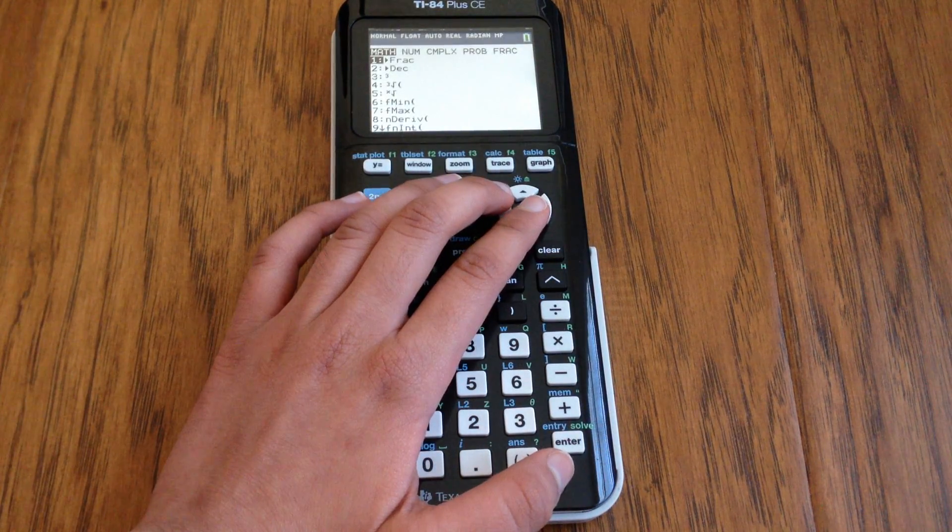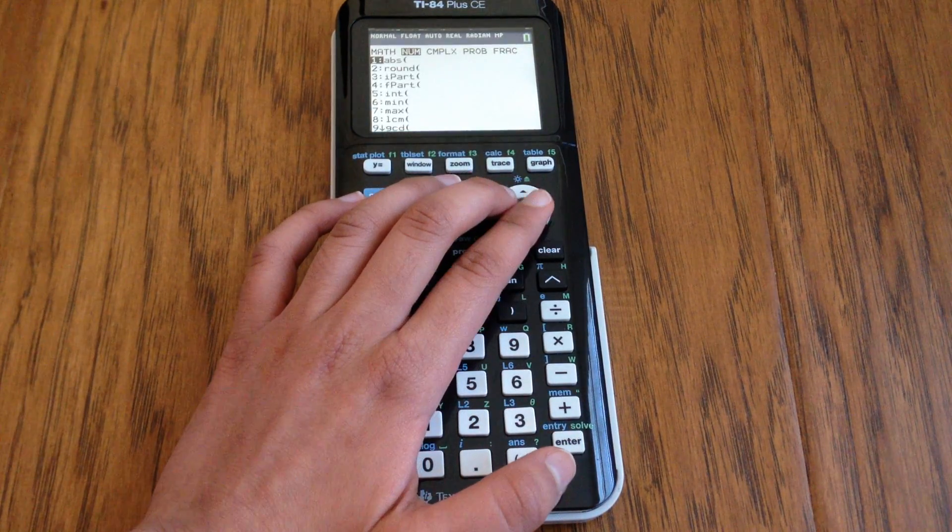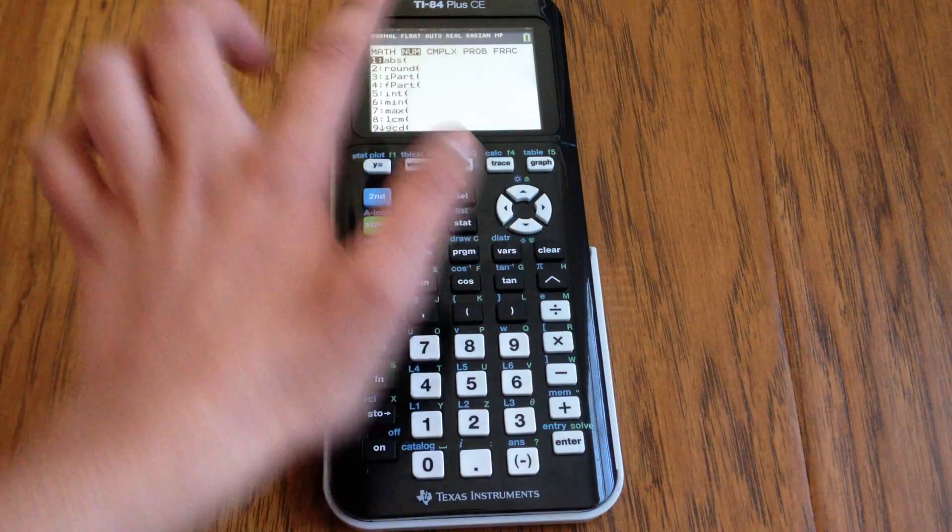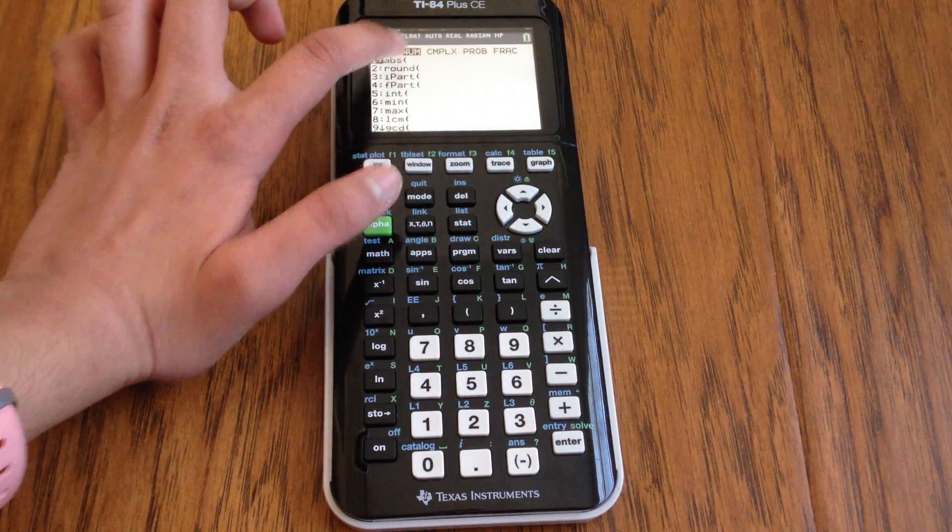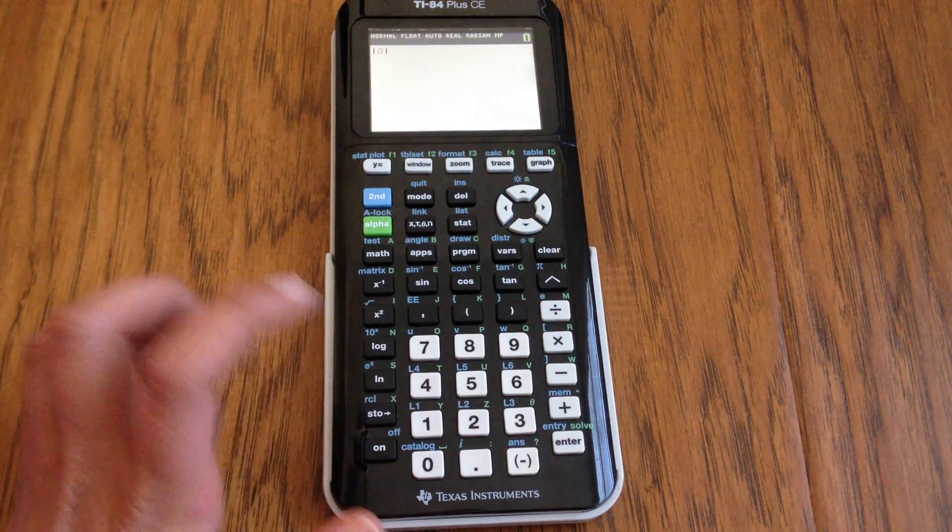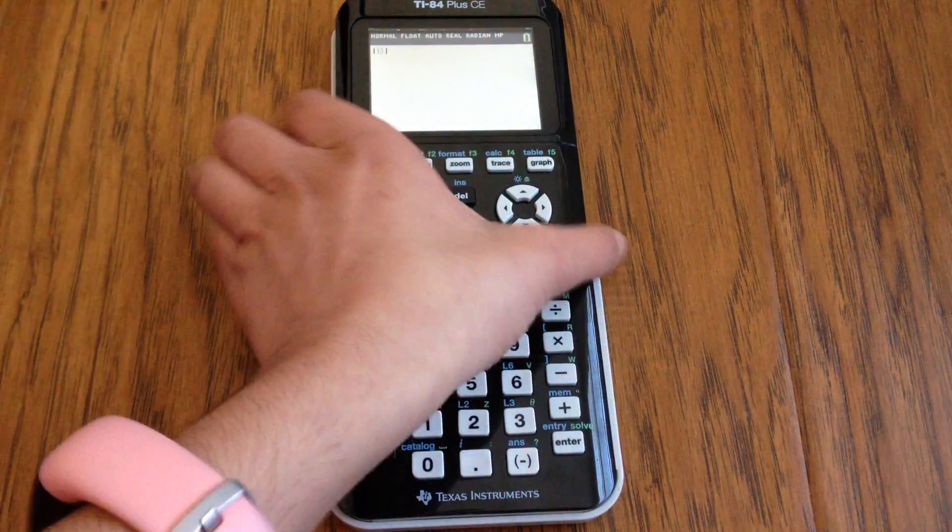In order to get the absolute value, you would go to math, then you would scroll to num for number, and then hit number one. And that would make these two little bars appear,